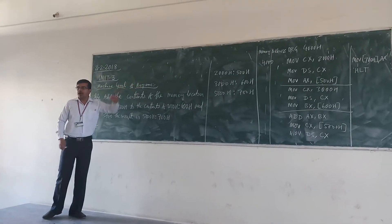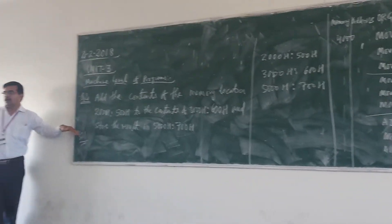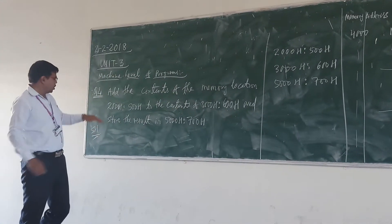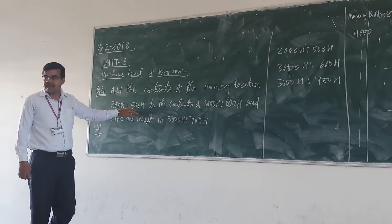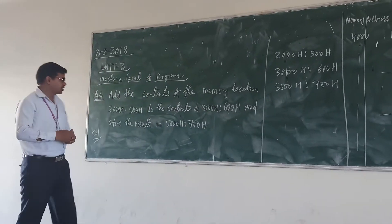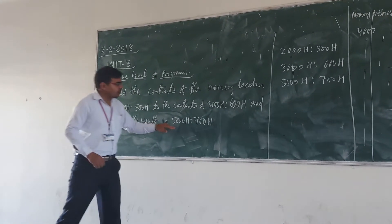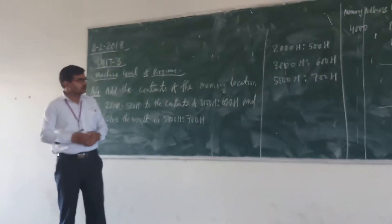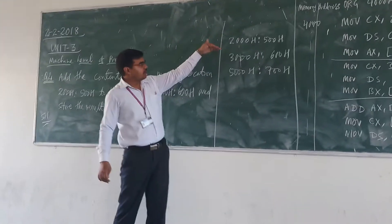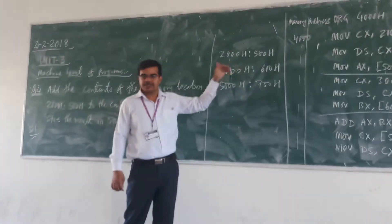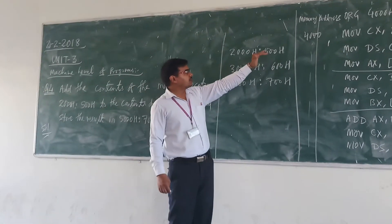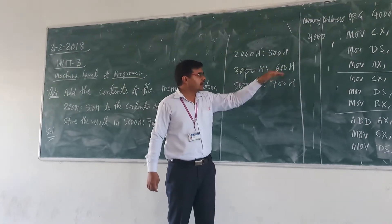In this machine level program, we add the content of memory location 2000h:500h to the content of 3000h:600h, and store the result at 5000h:700h. This involves different segment analysis — segments are 2000h, 3000h, and 5000h, with memory offsets 500h, 600h, and 700h.